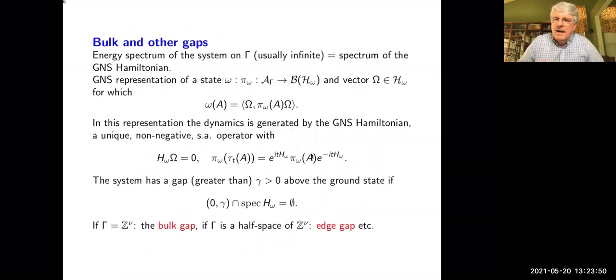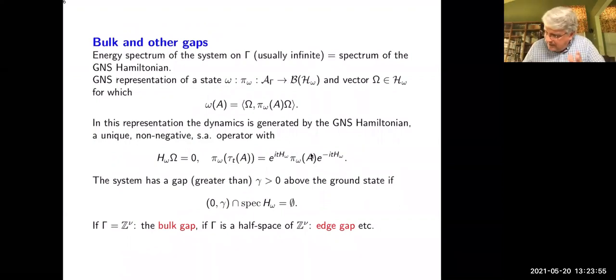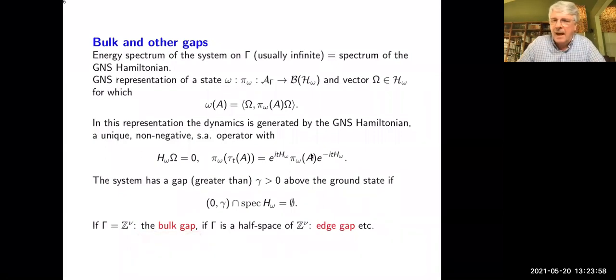We've been talking about gapped ground state phases. The gap we are talking about is the gap in the spectrum of the GNS Hamiltonian. Zero is the bottom of the spectrum. If there is an open interval of the form (0, gamma) that has empty intersection with the spectrum, we say we have a gapped ground state. If gamma is the full lattice with no boundary, that's what is physically referred to as the bulk gap.